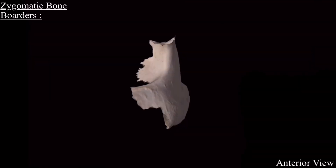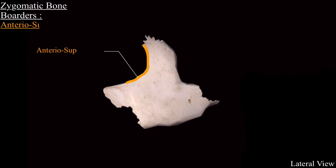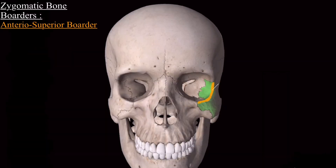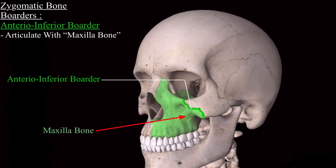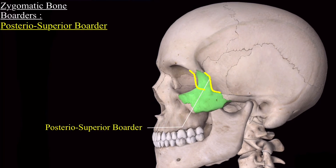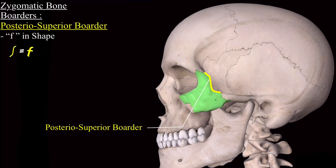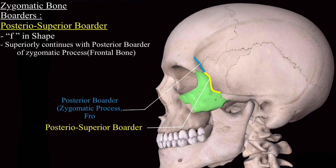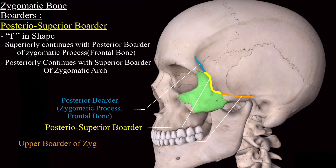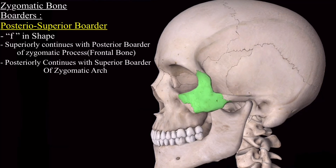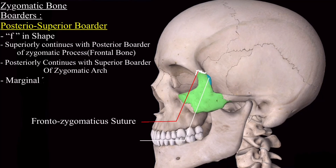The five borders of the zygomatic bone: the anterior superior border forms the floor and lateral wall of the orbital rim. The anterior inferior border articulates with the maxilla bone. The posterior superior border resembles the Italian letter F in shape, is continuous above with the posterior border of the zygomatic process of the frontal bone, and posteriorly with the upper border of the zygomatic arch. Just below the frontozygomaticus suture, a tubercle called the marginal tubercle is present on this border.